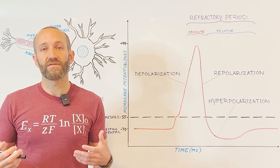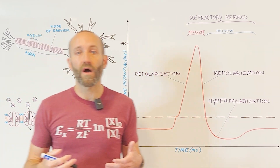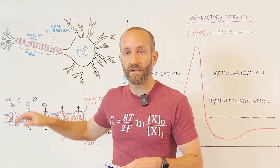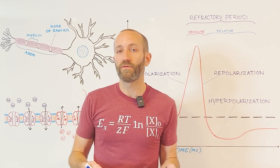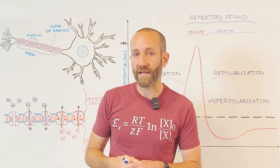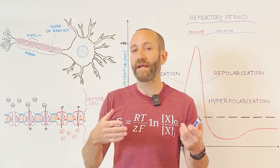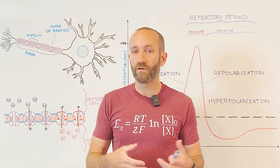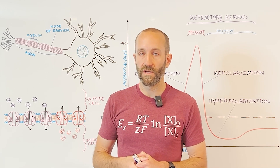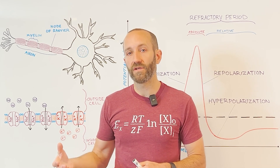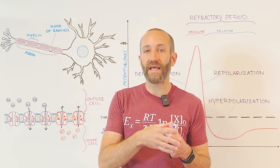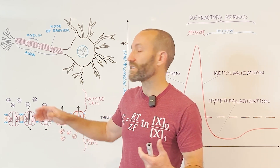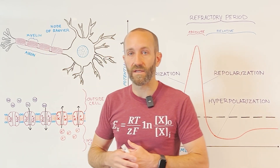So this influx of sodium ions is really responsible for causing the action potential, but what causes it to move down the axon? When this process of depolarization occurs in one segment of the axon, it happens in the segment right next to it as well, because the adjacent segment is also rich in voltage-gated sodium channels. So the depolarization causes them to open, and this regenerates the action potential in the next segment of the axon. The action potential is kind of like a spreading fire that moves down the axon.